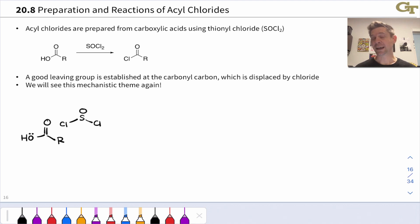To make acyl chlorides because they are so reactive is actually a little bit tricky. We can't make them through a straightforward nucleophilic acyl substitution process because chloride is just too weak of a nucleophile to engage with esters, amides or any other type of carboxylic acid derivative.